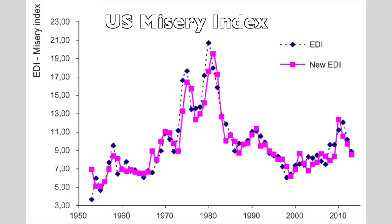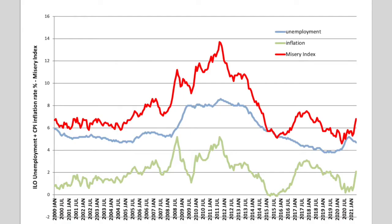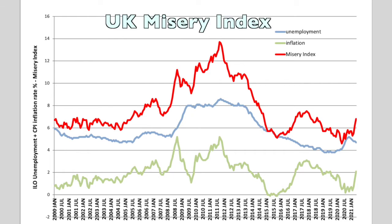One way that stagflation is measured is through something called the misery index. The misery index is simply adding the inflation rate to the unemployment rate. You can see that in the 1970s the misery index rose quite high, and in recent years — say 2008 to 2011 — the misery index rose again. And as we come into 2021-2022, there are concerns that we're getting a return to stagflation.